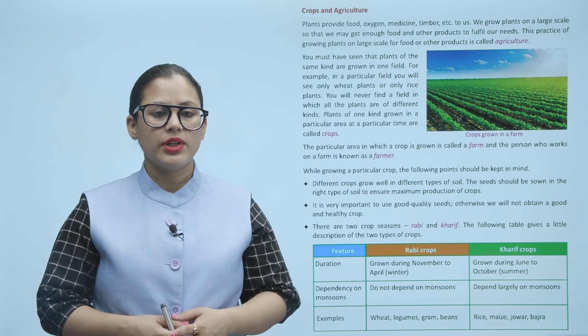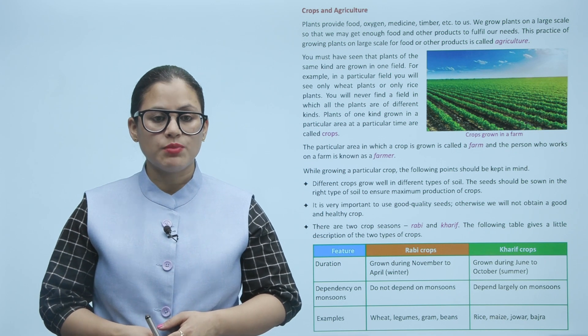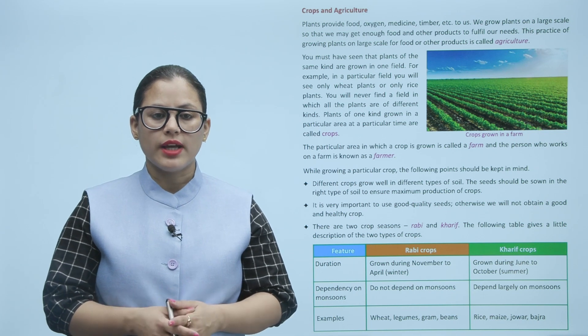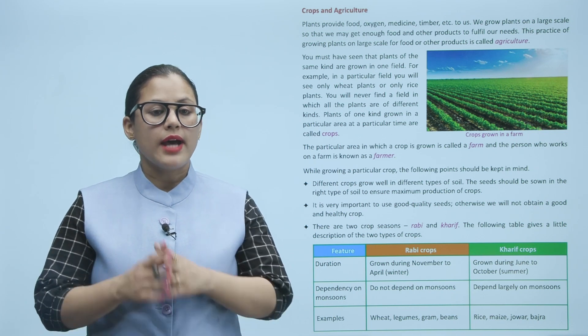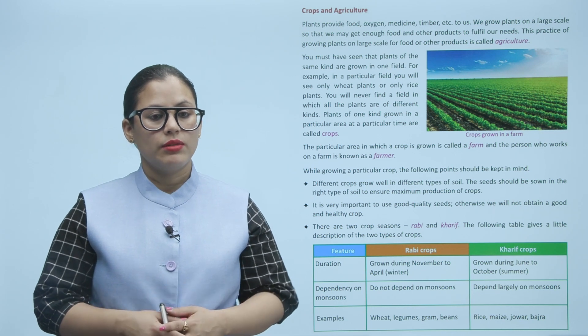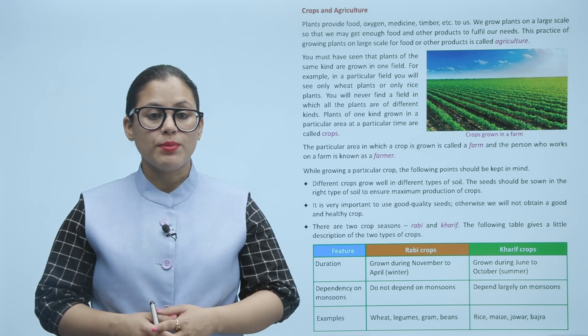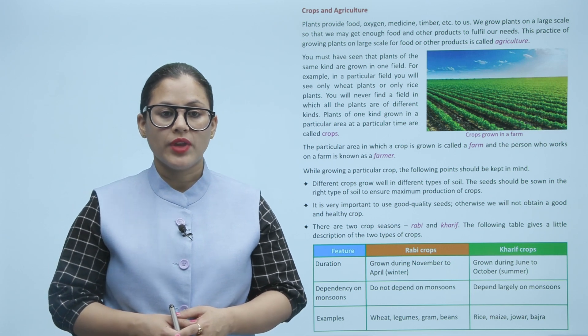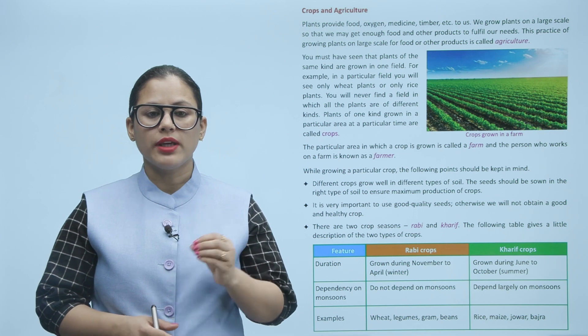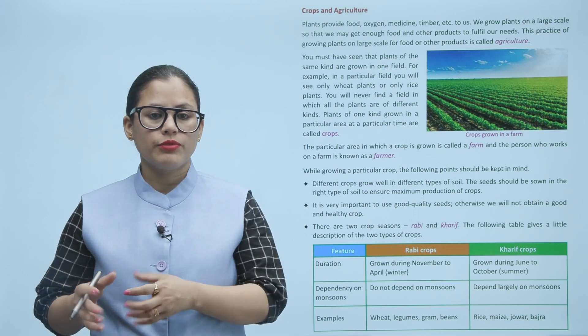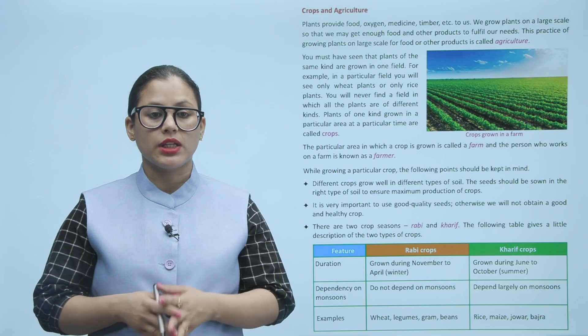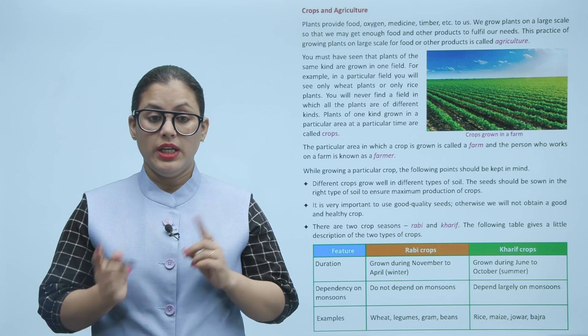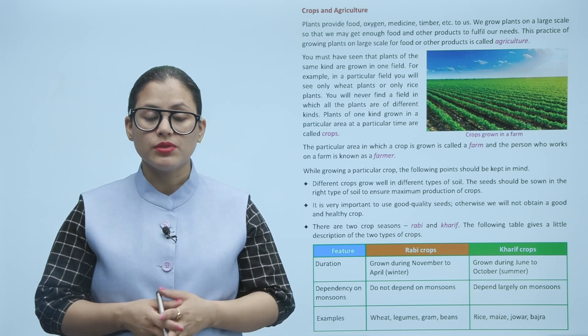You must have seen that plants of the same kind are grown in one field. For example, in a particular field you will see only wheat plants or only rice plants. You will never find a field in which all the plants are of different kinds. Plants of one kind grown in a particular area at a particular time are called crops. The particular area in which a crop is grown is called a farm, and the person who works on a farm is known as a farmer.